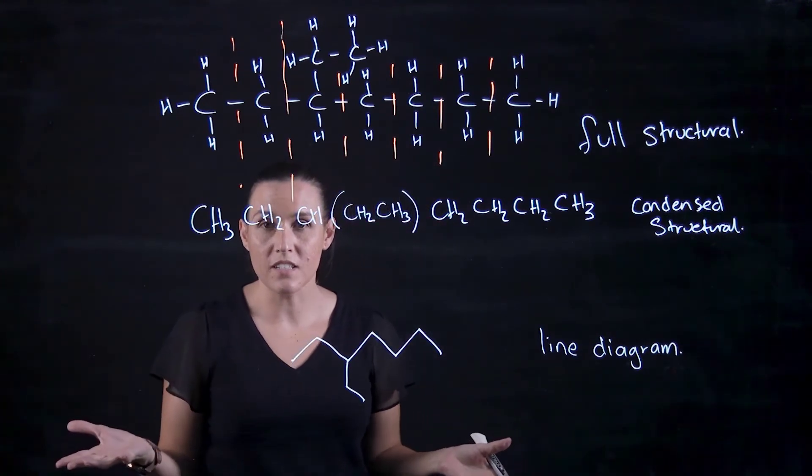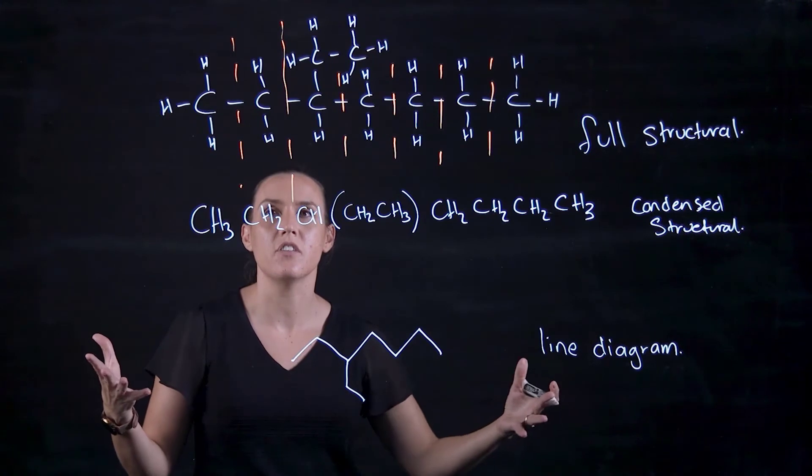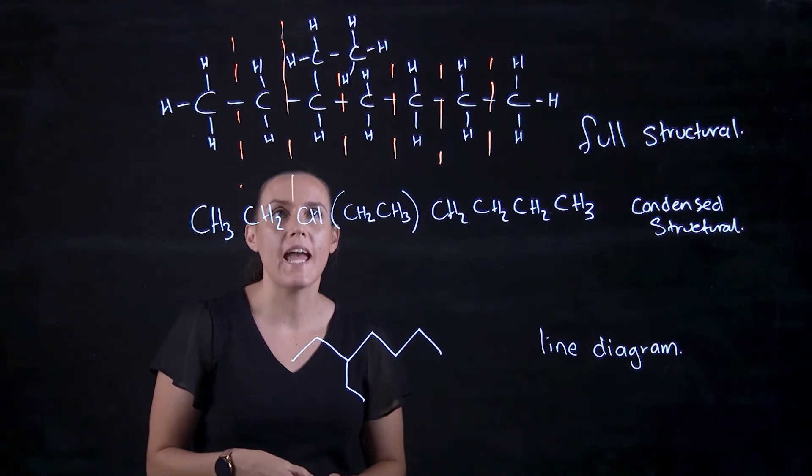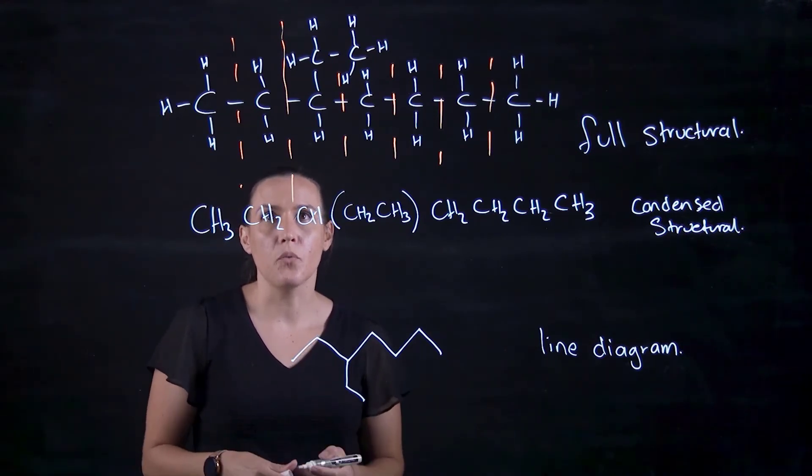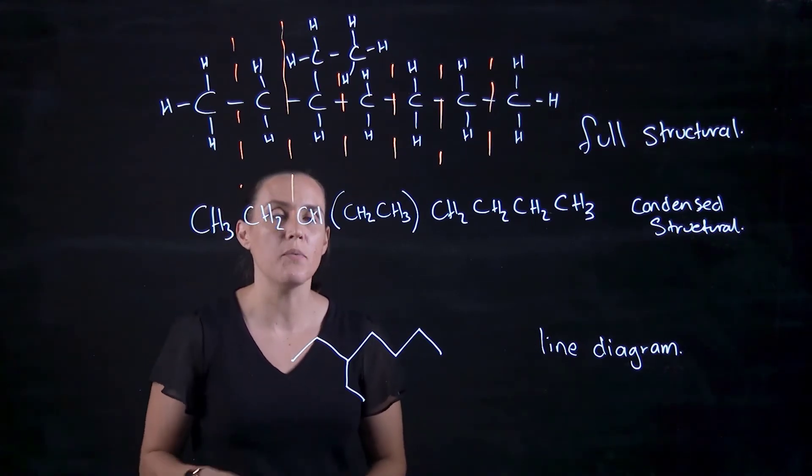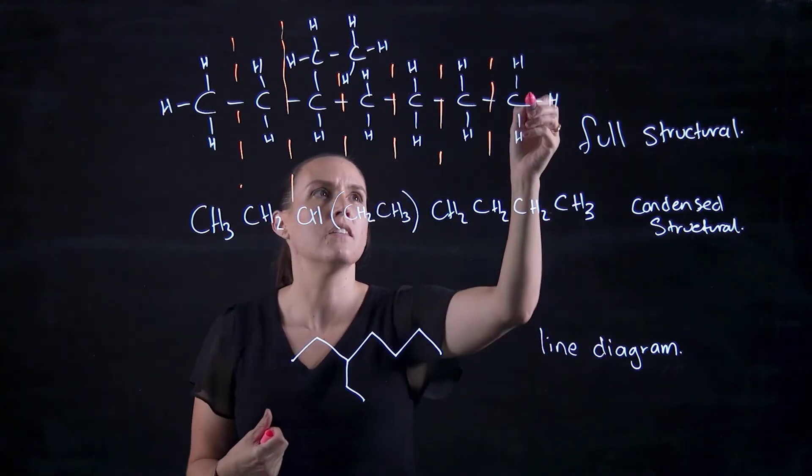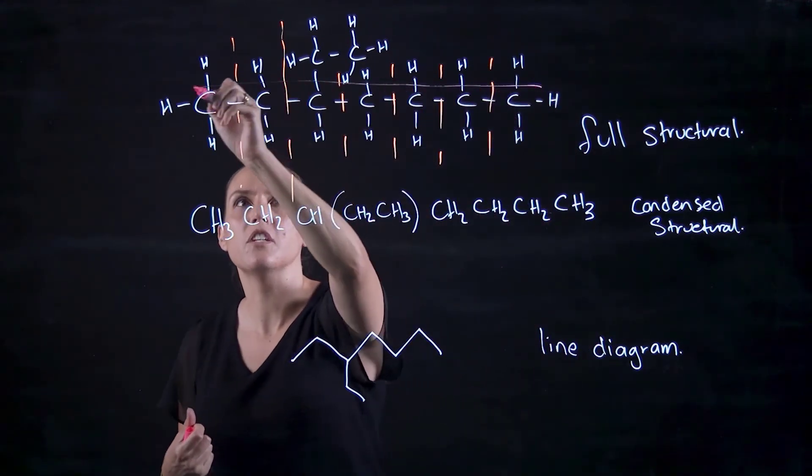Now we could name this one to take it even further. So this is how we draw it, how we represent the structures. Now if I wanted to name that, we could look at the longest continuing chain of carbons. I'll work with the full structure because it's a more visual way of representing it. So the longest continuing chain.